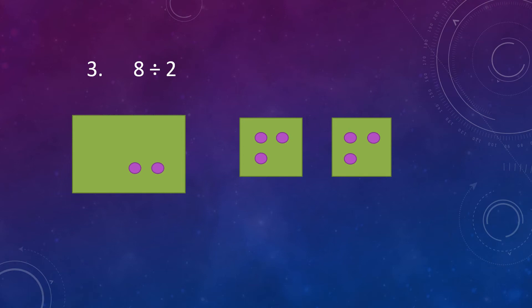So put them in each box — take one and put it in the first box, take another and put it in the second box. Now there are 0 dots left. All the dots have been divided and each box has 4 dots. So, 8 divided by 2 is equal to 4.